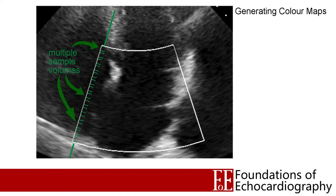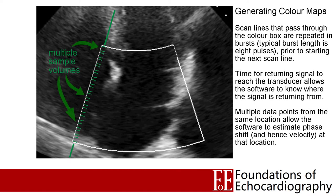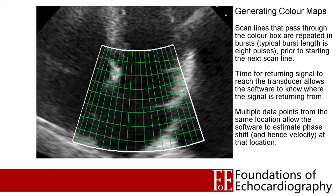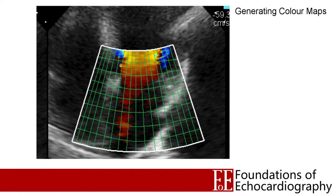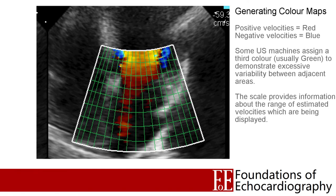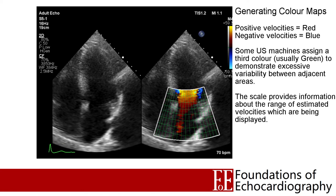It can't estimate phase shift from a single piece of information — it requires multiple values from the same location. So those scanlines that pass through the box are rapidly repeated, typically around 8 times, before moving on to the next scanline. Once there's been enough time for the scanline to sweep through the colour box, we end up with a grid of estimated velocities which can then be represented as a colour. By convention, positive velocities moving towards the transducer are represented with a shade of red, whereas negative velocities away from the transducer are represented with shades of blue, with brighter shades representing faster velocities.